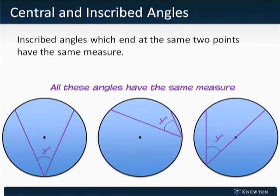Here are some interesting points about inscribed angles. Notice how on this slide, all three of these inscribed angles have the same endpoints. They end at the same place on the circle. Their vertex is, however, in three different spots. Nonetheless, any inscribed angles which end at the same two points have the same measure.